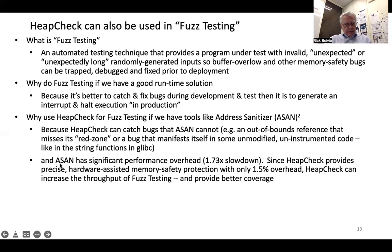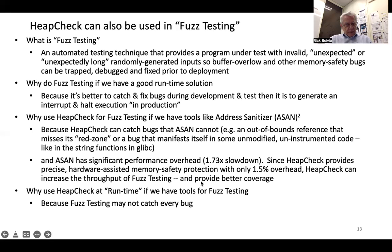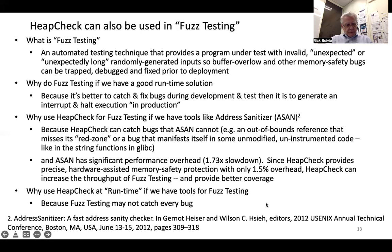Furthermore, ASAN has significant performance overhead — 1.73x slowdown. Since HeapCheck provides precise hardware-assisted memory safety protection with only 1.5% overhead, HeapCheck can increase the throughput of fuzz testing and provide better coverage. Why use HeapCheck at runtime if we have fuzz testing? Because fuzz testing may not catch every bug.